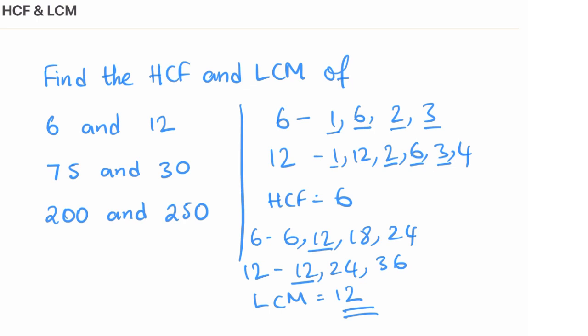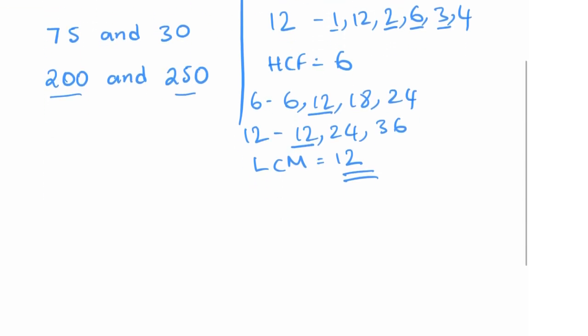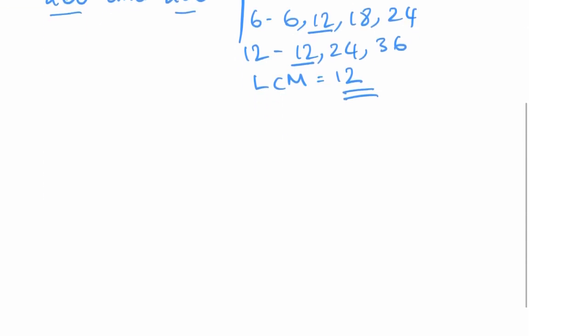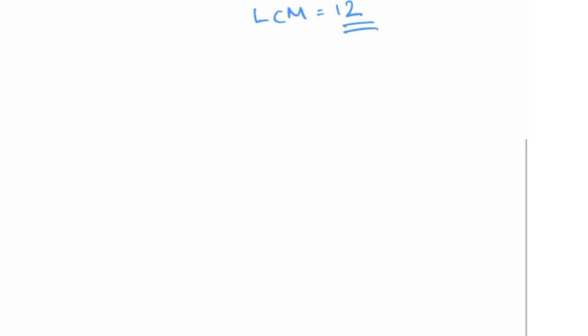For example, 75 and 30, or 200 and 250. So today I'm going to show you a super quick way to find the highest common factor and lowest common multiple of big numbers. Let's start off by applying the method to smaller numbers first.